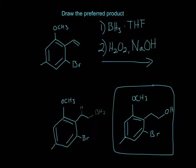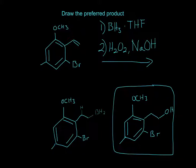So if you had a synthesis question and you needed an alcohol — an OH on the less substituted spot — instead of this spot you wanted something on this one, you'd use BH3/THF and then H2O2 and NaOH to get OH on the less substituted spot. I hope that helped, and thanks for watching.